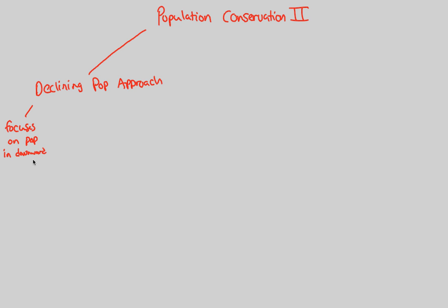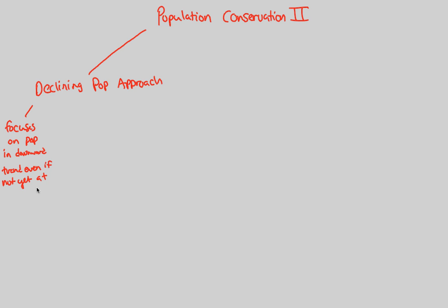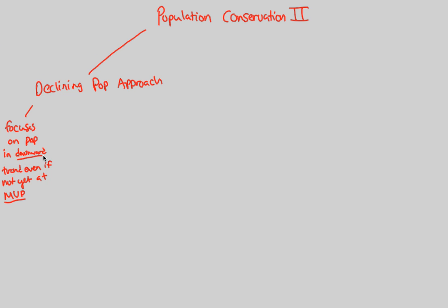In the declining population approach, we're going to be focusing on a population in a downward trend, even if it's not yet at that very important minimum viable population number. So even if we're not at the MVP level, we're still going to be focusing on this declining population because we have to conserve it somehow and figure out a way to fix this downward trend.